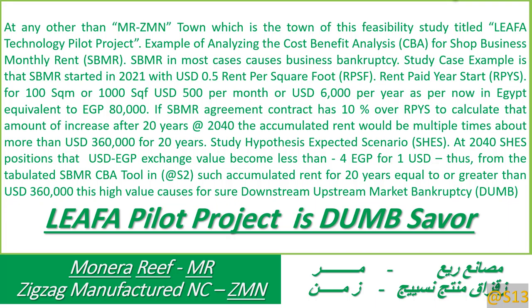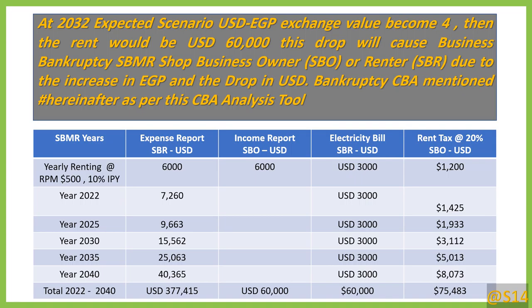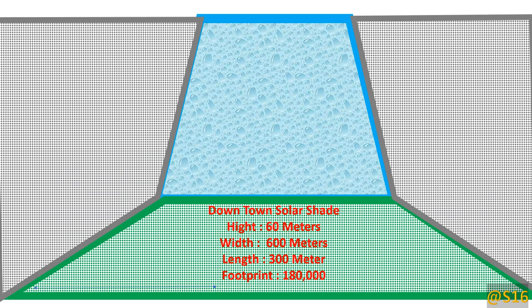Over 20 years it is very fast for the currency to drop to a quarter of its value. The shop will be affected by both the rent and the electricity bill. The energy bill will stay the same in dollar terms — so if it was 3,000 per year, it will stay 3,000 dollars per year, which is a lot.